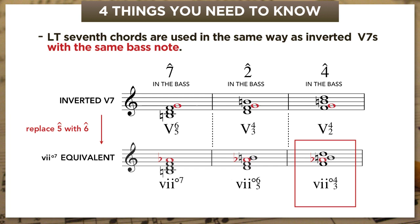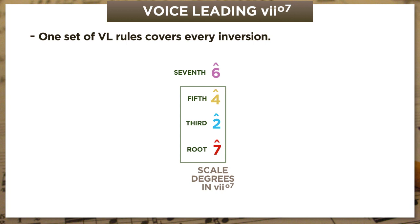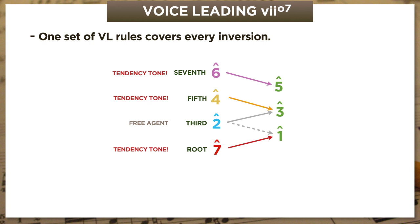Now let's talk about voice leading. It's convenient for us that a lot of the voice leading rules we know about dominants also carry over into 7 diminished 7, including the fact that we only need one set of voice leading rules to cover every inversion of the chord. So 7 diminished 7 is built from scale degrees 7, 2, 4, and 6. And the three notes it has in common with inverted 5 7s all behave the same way. Scale degree 7 wants to go up by step. Scale degree 4 wants to go down by step. Scale degree 2 can go in either direction, although now it tends to prefer to go up to scale degree 3. And that leaves scale degree 6, which is a new note—it's not in 5-7—and it wants to go down by step. Because it's a chordal 7th, and that's what chordal 7ths do.